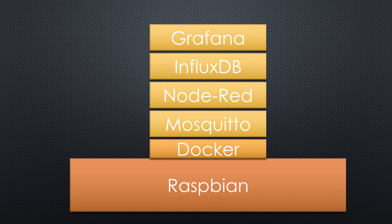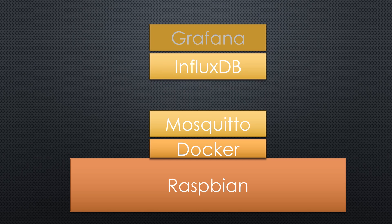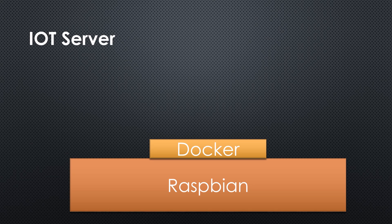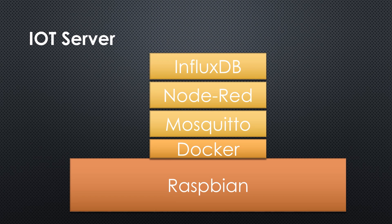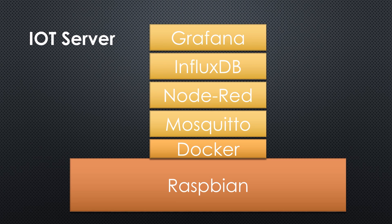Once copied to our Raspberry, you can start and stop containers as well as delete them. An IoT server for our lab consists at least of Mosquitto, Node-RED, InfluxDB and Grafana. So what are the steps to get those containers running?